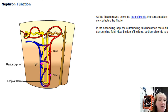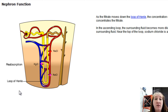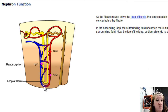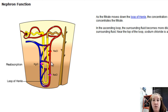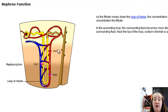As filtrate moves down the loop of Henle, there are pores allowing water out — since the surrounding fluid gets increasingly concentrated, water moves out by osmosis, no energy required, allowing water back into the blood. As the loop of Henle goes back up, all water channels are closed, but salts can move out. At the top, the body expends ATP to actively transport salt out of the filtrate to ensure not too many salts are lost.